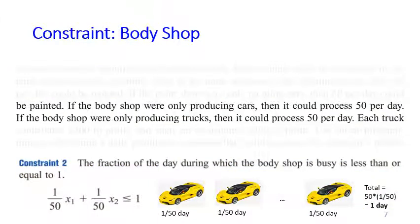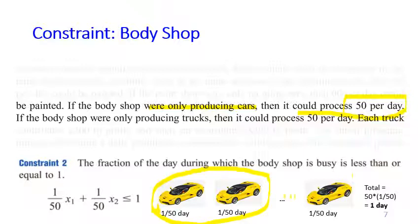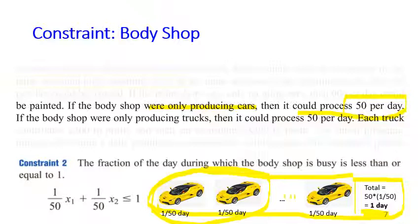For the body assembly shop: if it only assembles cars it can process 50 cars per day, so one car spends 1/50 of a day. Each truck also spends 1/50 of a day in the body shop. Therefore the second constraint is: (1/50)x1 + (1/50)x2 ≤ 1, meaning total assembly time for both cars and trucks must not exceed one day.